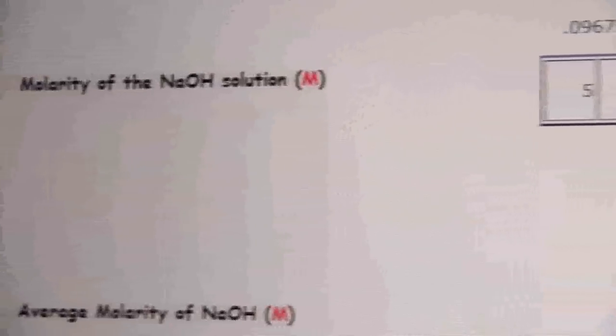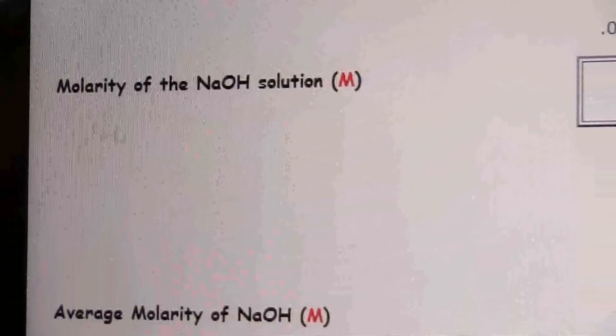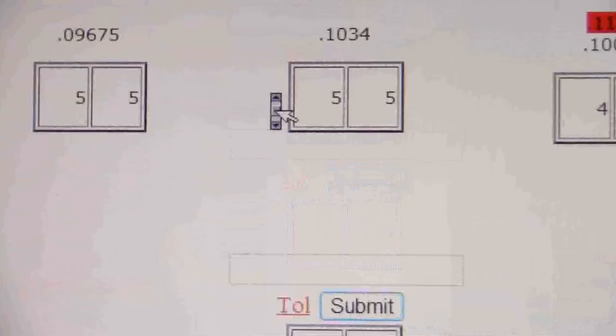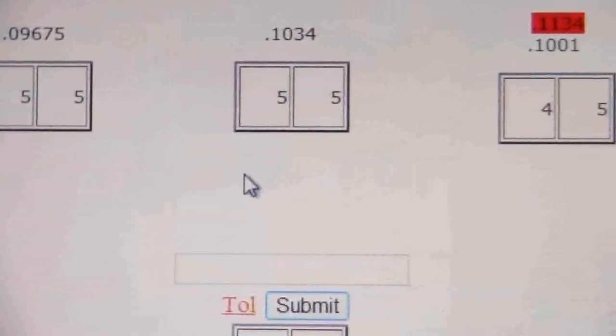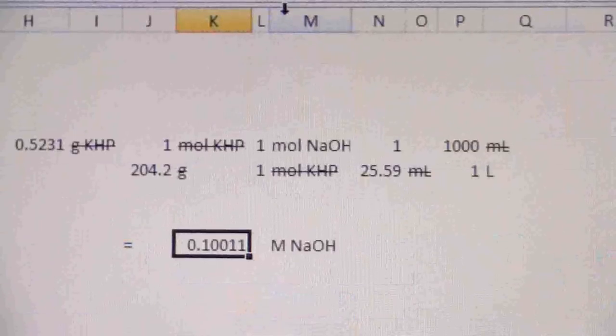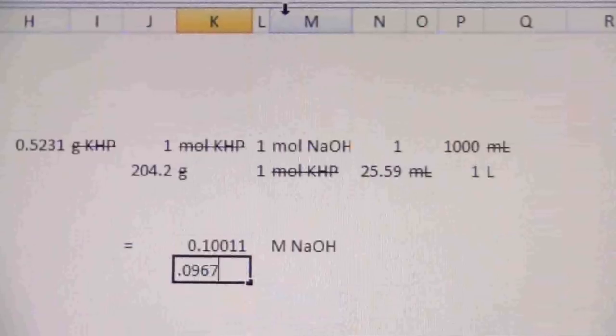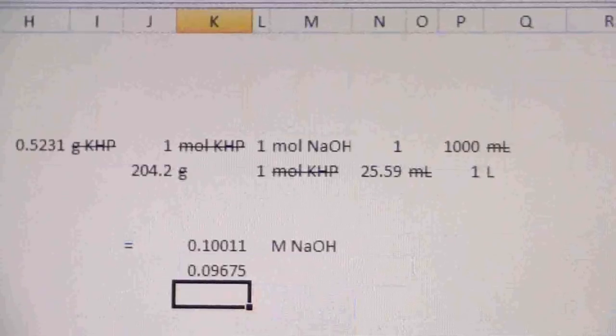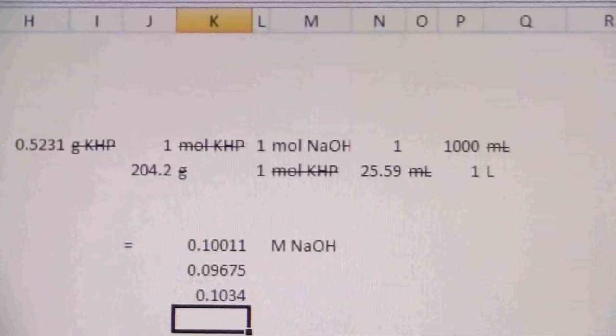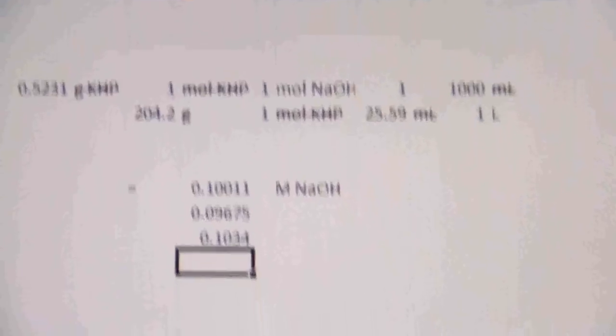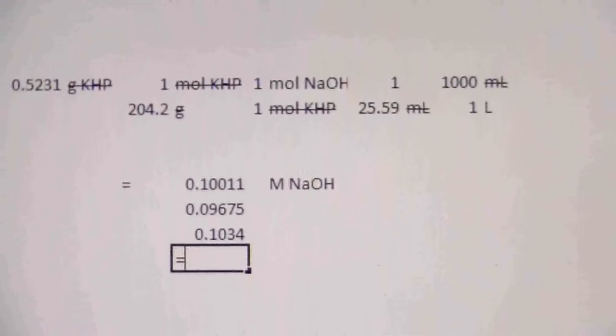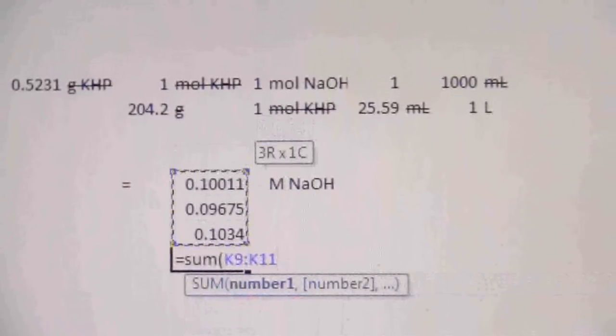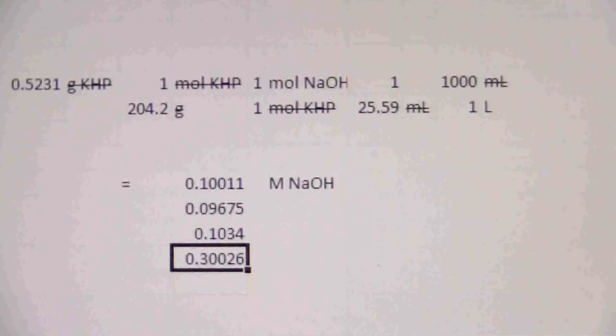So it should take that. Now it's asking for the average molarity of the NaOH. Okay, the average molarity is just going to be the average of these three values. So point zero nine six seven five, I'll go ahead and add these in here. And the second one was 0.1034. Okay, so if I add these together, handy feature in Excel is I can just sum them up and there's my sum and I can divide that by three.